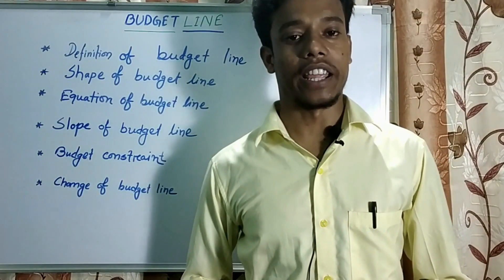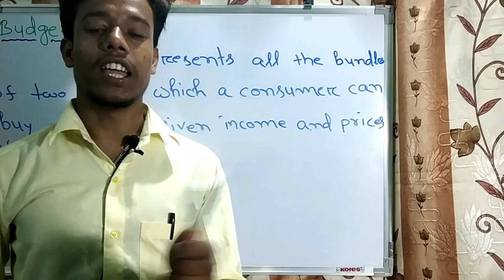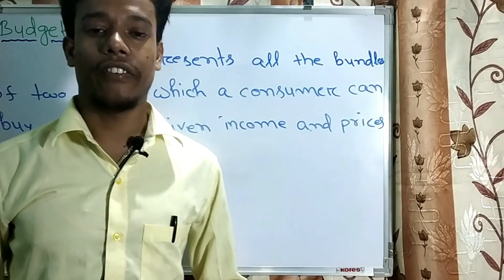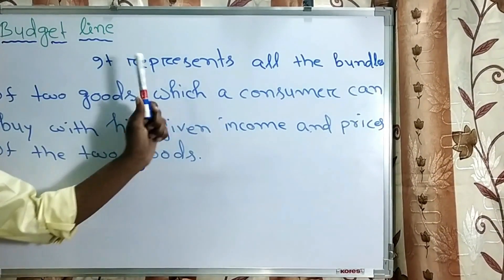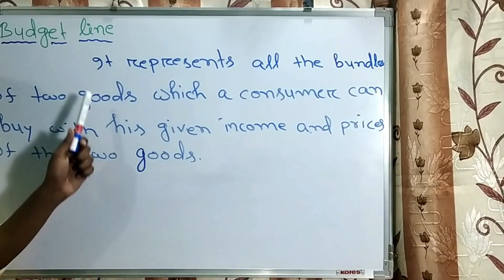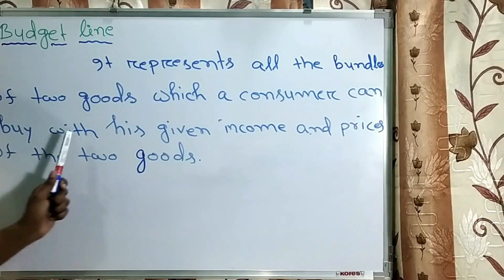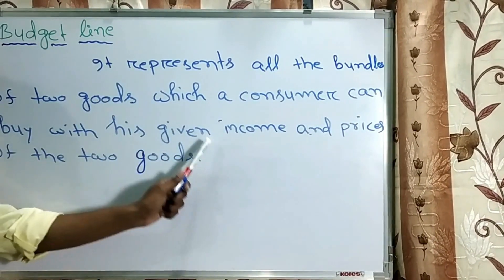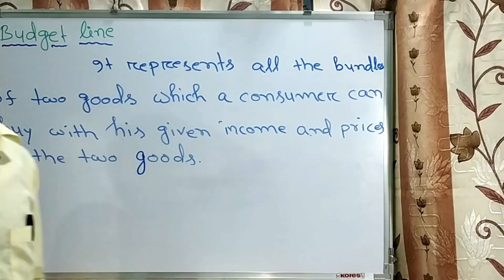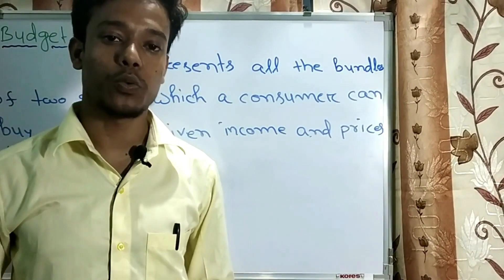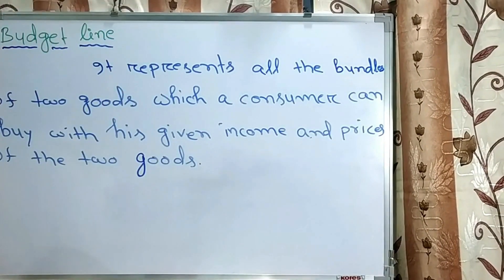Let's start with the definition of budget line. The budget line represents all the bundles of two goods which a consumer can buy with his given income and given prices of the two goods. Let's understand this with the help of an example.